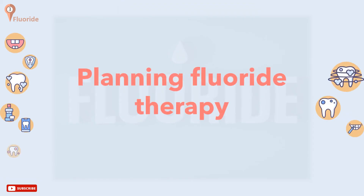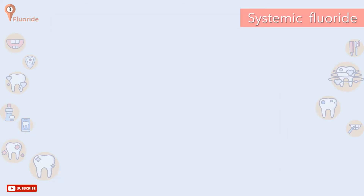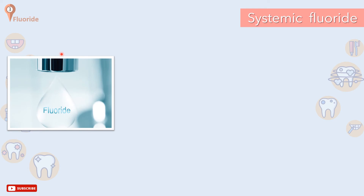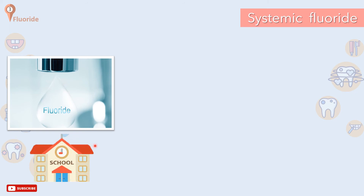Now to how to plan fluoride therapy for patients. The first line is systemic fluoride. To minimize the risk of mottling, only one systemic measure should be used at a time. Water fluoridation at 1 part per million — equal to 1 mg of fluoride per litre — reduces caries by about 50%. The main advantages are both systemic and topical effects on teeth, no effort required on the part of individuals, and low cost. In some countries, school water has been fluoridated, but a concentration of 5 parts per million is required to offset the less frequent water intake.